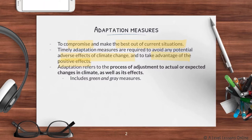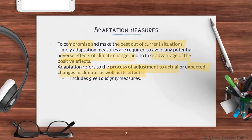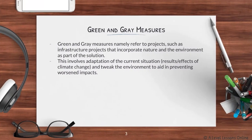Adaptation refers to the process of adjustment to actual or expected changes in climate and its effects. It includes green and gray measures. We're really looking at adjusting current processes to the actual effects of climate change that have already begun to take place. We are no longer looking at preventing climate change from happening; we have accepted it and now create new policies and strategies to fit these effects.